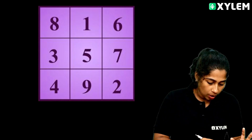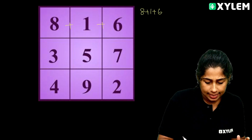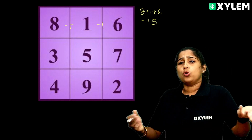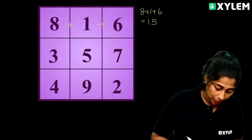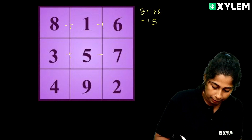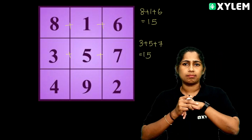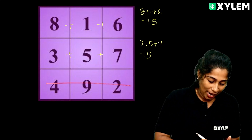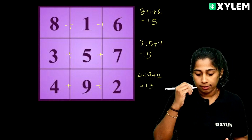Some of them — first, we have 8 plus 1 plus 6. 8 plus 1 plus 6 equals 15. Then we add 4 plus 9 plus 2, and again we are getting 15. The magic number is 15!